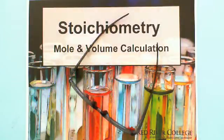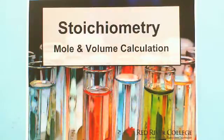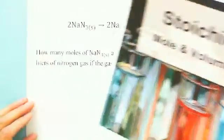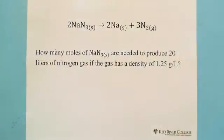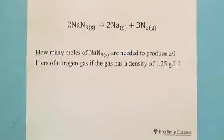Hello, welcome to Wiseguys. This session is about mole and volume calculation. I'm going to show you two questions. The first one: given a chemical reaction equation showing NaN₃, which we call sodium nitride, decomposing into sodium solid and nitrogen gas — how many moles of sodium nitride are needed to produce 20 liters of nitrogen gas if the gas has a density of 1.25 grams per liter?